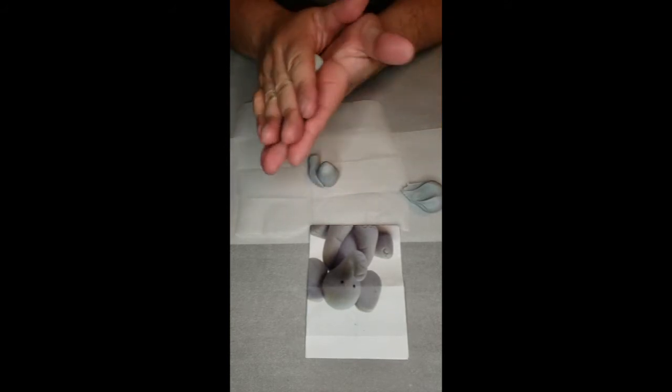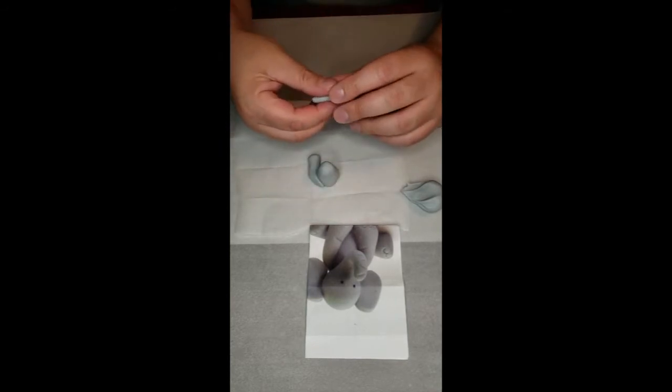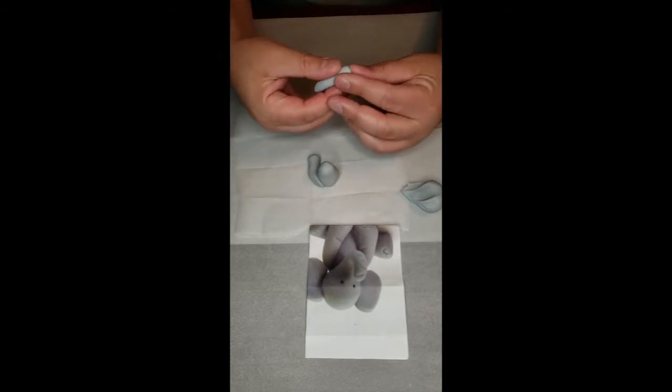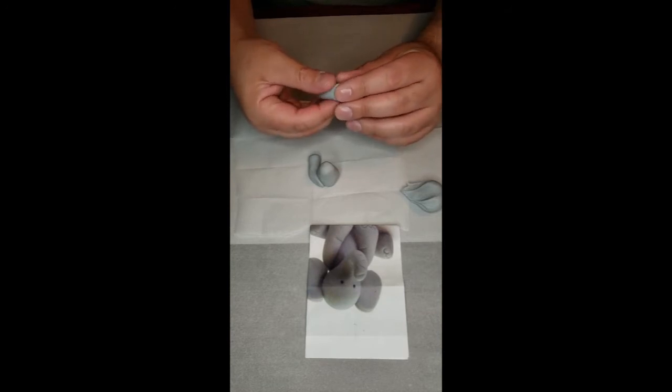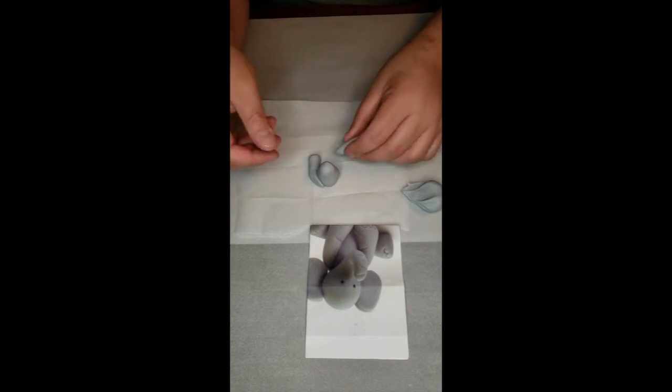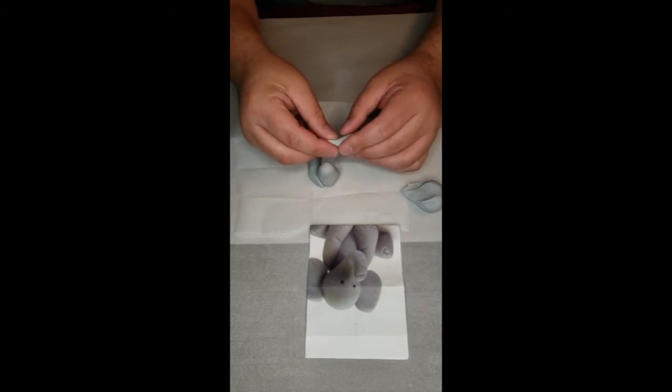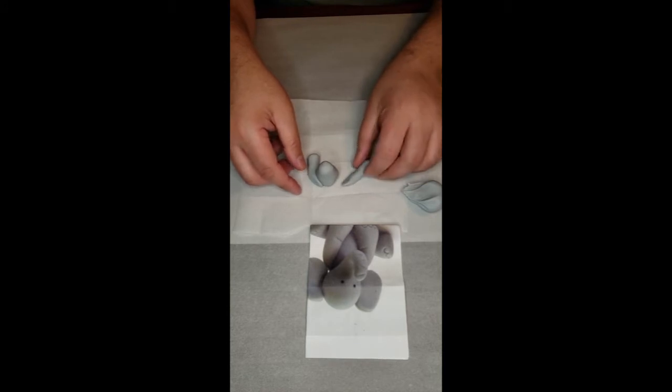Now I am going to make a ball again and then I am going to stretch it out. And it is going to do the same thing. One end will be thicker than the other so we can make the foot. I am going to flatten the other side, the other end, so I can stick it.